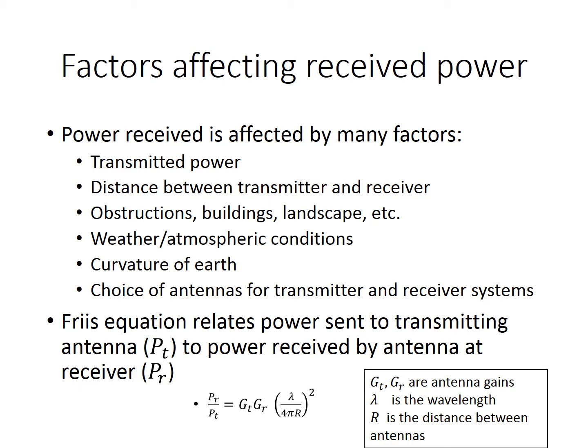The Friis Transmission equation describes the relationship between received power and transmitted power in free space, that is, in the absence of any obstructions. In this case, the total amount of power does not diminish with distance as the transmitted signal spreads out in space, traveling away from the transmitter in all directions at the speed of light. However, the amount of this power that can be captured by a receiving antenna decreases with distance, since the same amount of power is distributed over a larger and larger spherical surface as the distance from the transmitter increases. This relationship is accurate for space communications, but communication on the Earth or through the atmosphere typically involves a greater attenuation or weakening of the signal power due to some of the factors mentioned above.